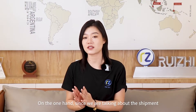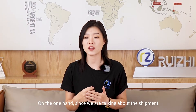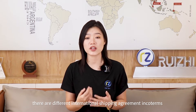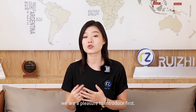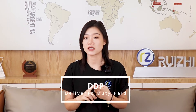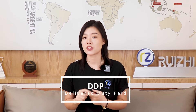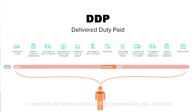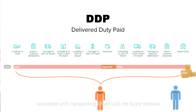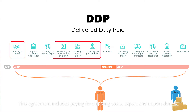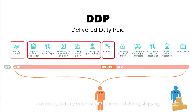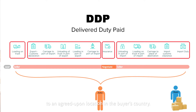Shipment arrangement. Since we are talking about shipment, there are different international shipping agreements. Number one, DDP — Delivered Duty Paid. It represents the seller assumes all of the responsibility, risk, and costs associated with transporting goods until the buyer receives them at the destination port. This agreement includes paying for shipping costs, export and import duties, insurance, and any other expenses incurred during shipping to an agreed-upon location in the buyer's country.